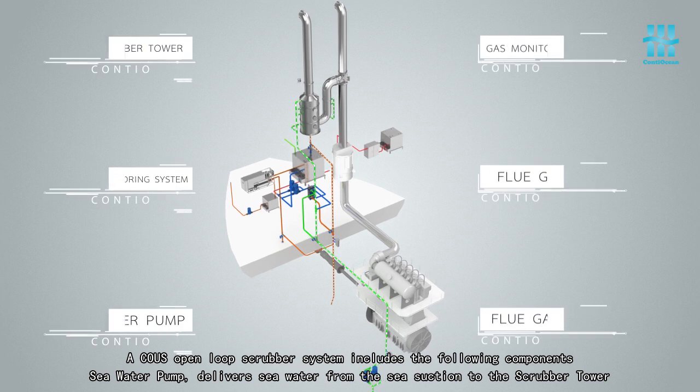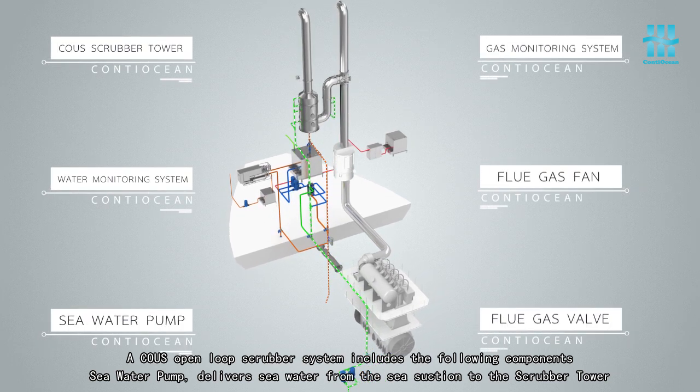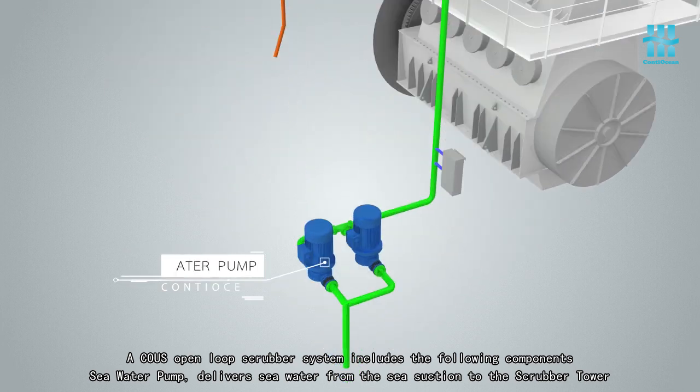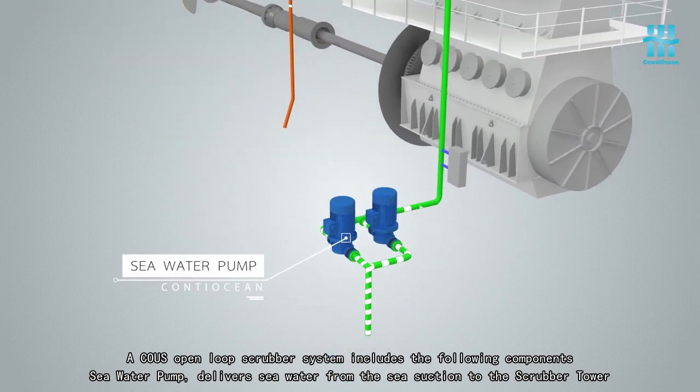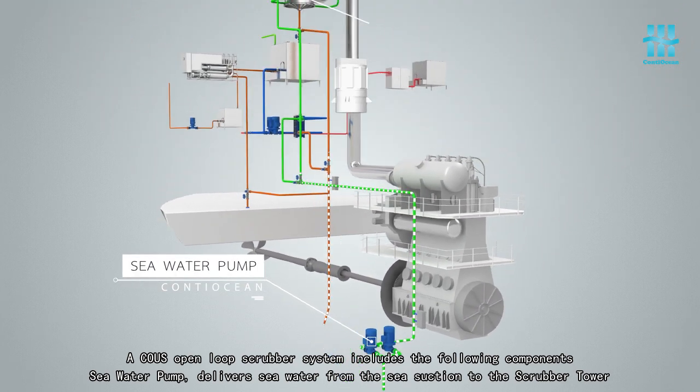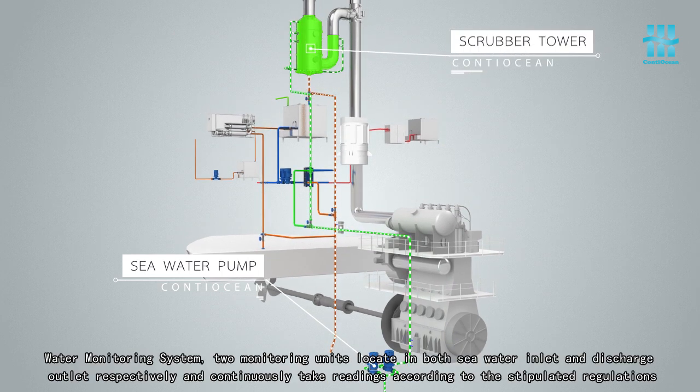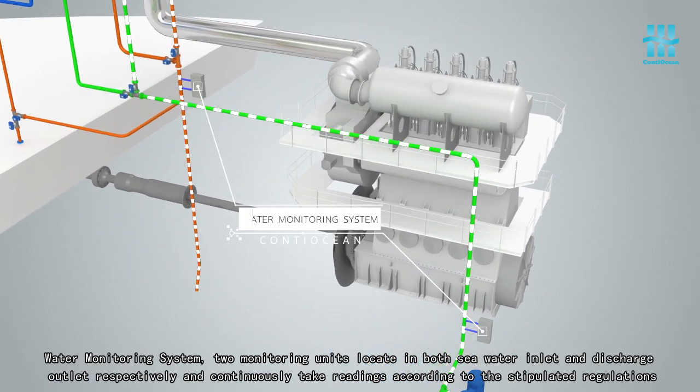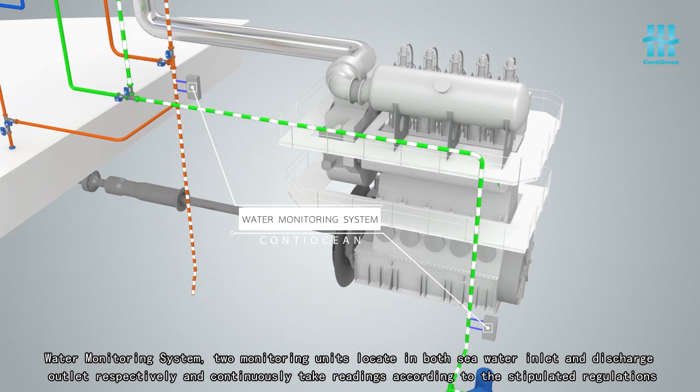A Koyu's open loop scrubber system includes the following components. Seawater pump delivers seawater from the sea suction to the scrubber tower. Water monitoring system to monitor units locating both seawater inlet and distort outlet respectively and continuously take readings according to the stipulated regulations.